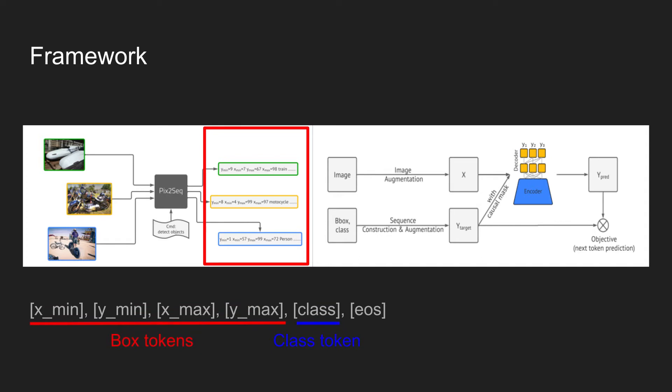For each object, four tokens are used to represent the bounding box of an object, and one token is used to represent the class of an object.